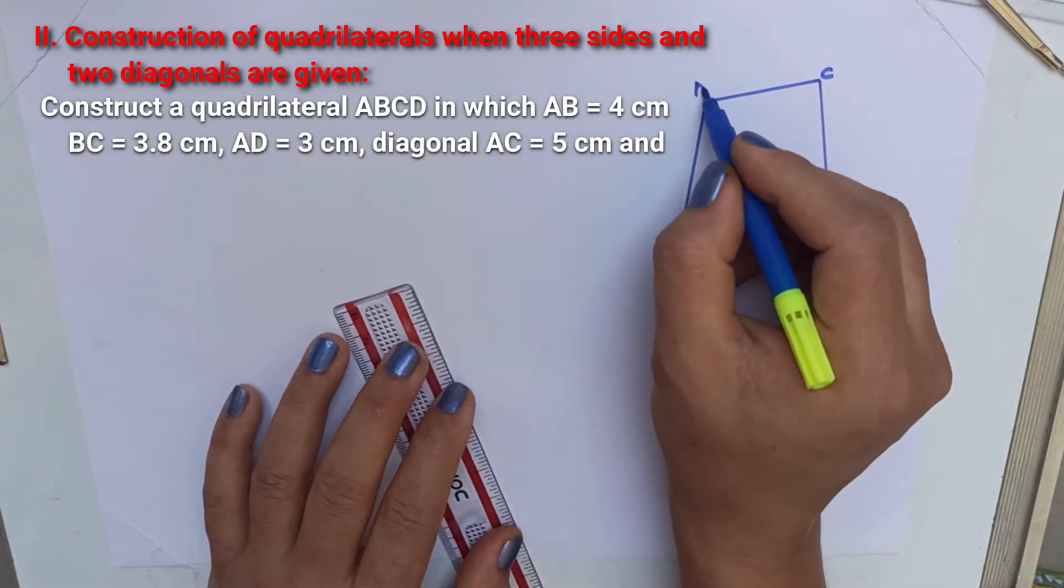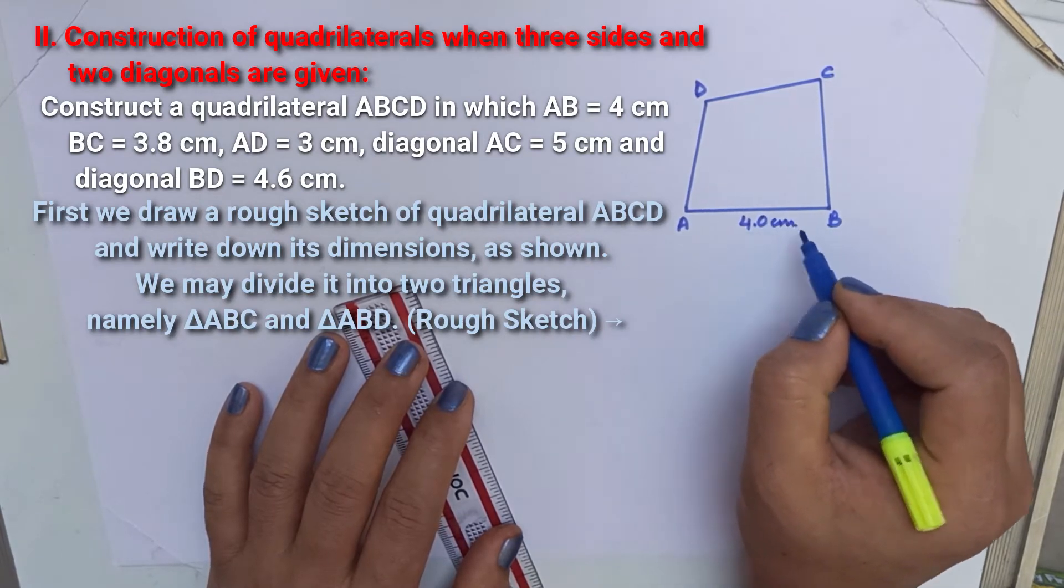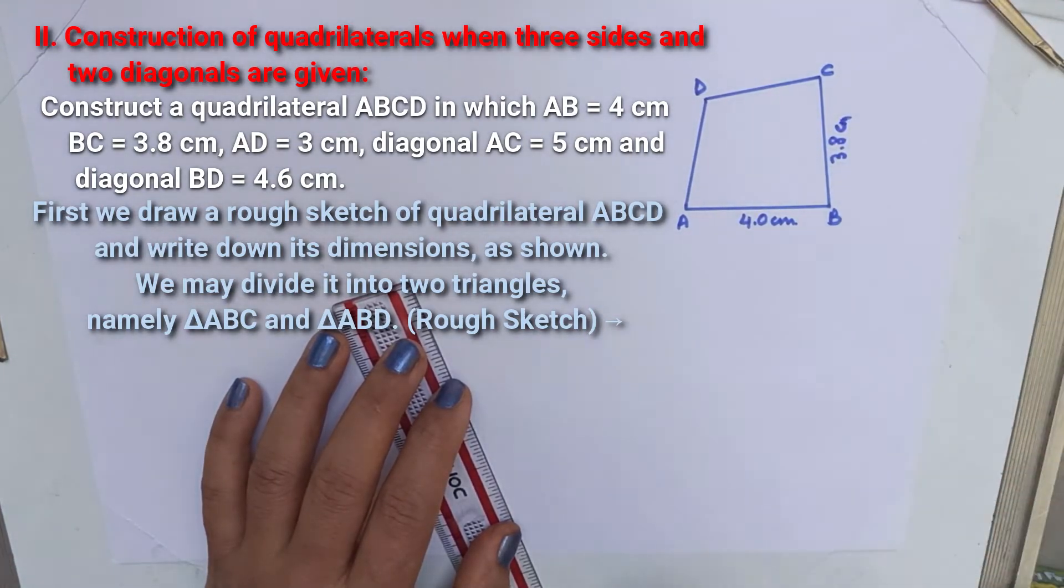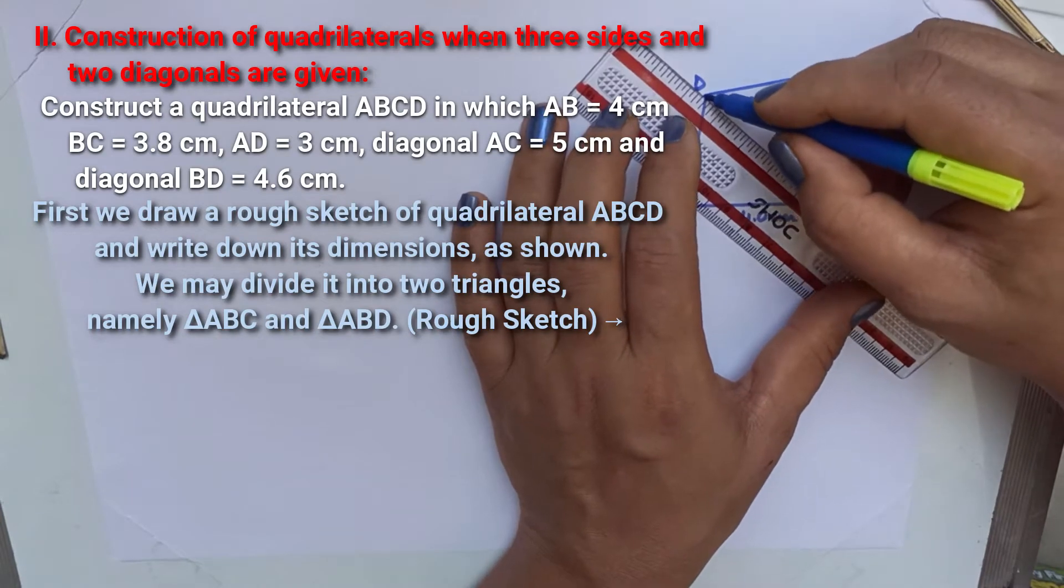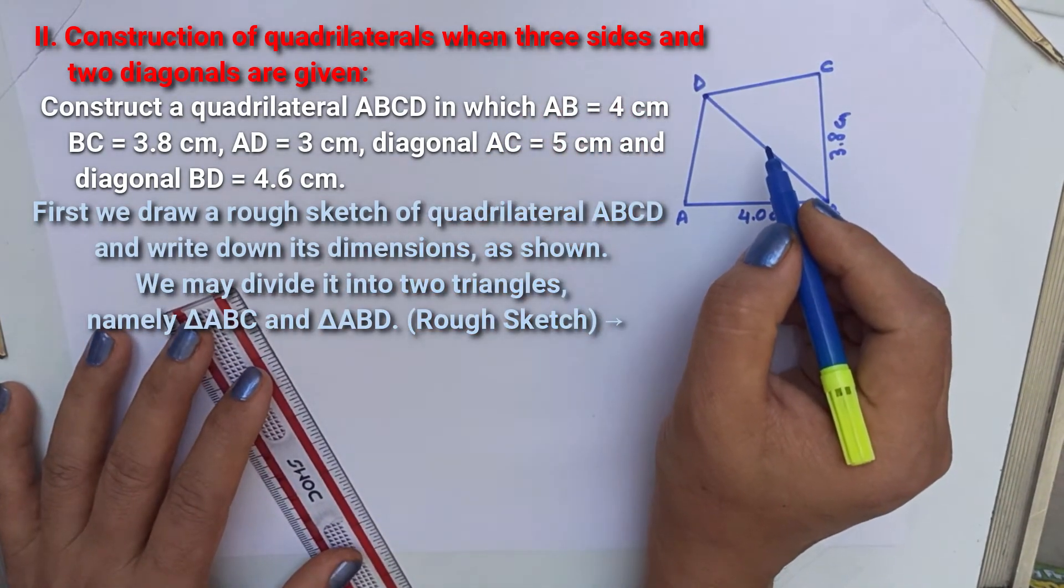To construct a quadrilateral ABCD in which AB is equal to 4 cm, BC is equal to 3.8 cm, AD is equal to 3 cm, diagonal AC is equal to 5 cm, and diagonal BD is equal to 4.6 cm.